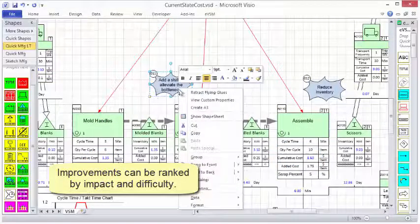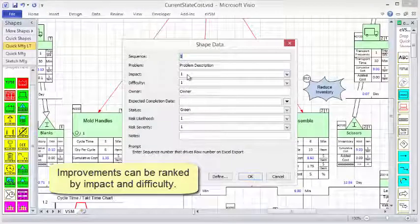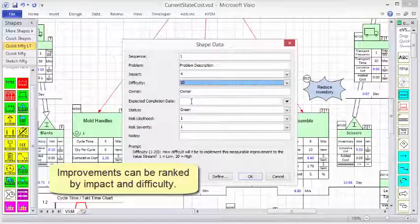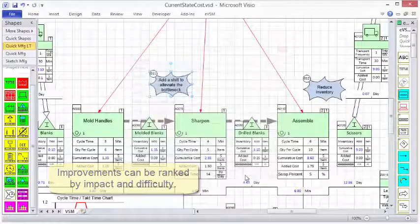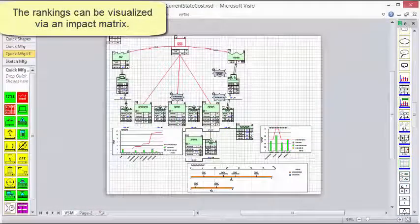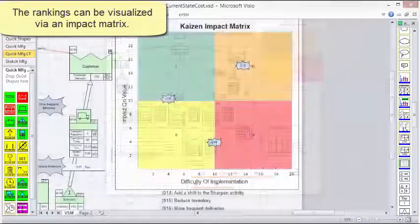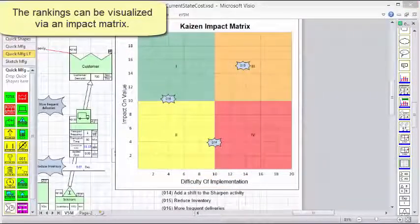Improvements need to be prioritized and can be ranked by impact and difficulty. The ranking can be seen using a Kaizen impact matrix. Changes can be made dynamically on the matrix.